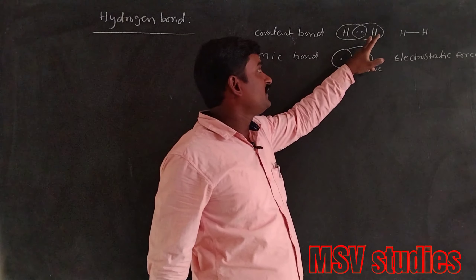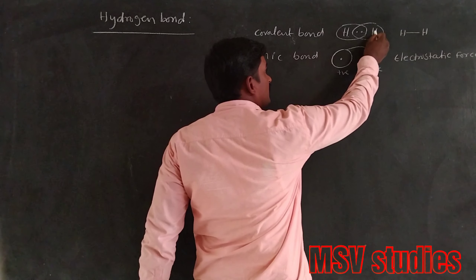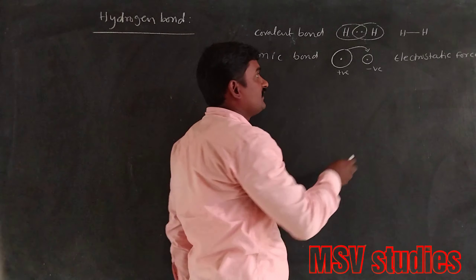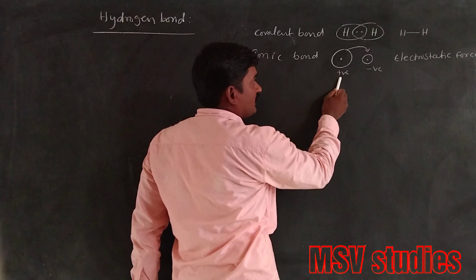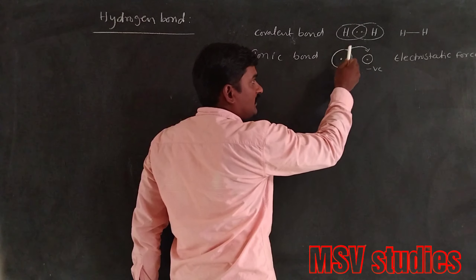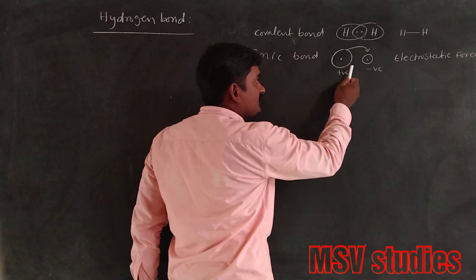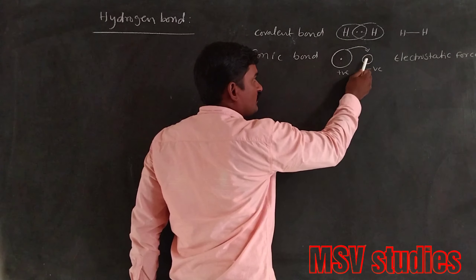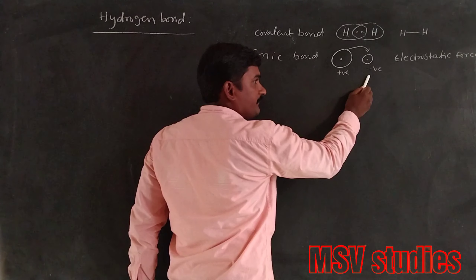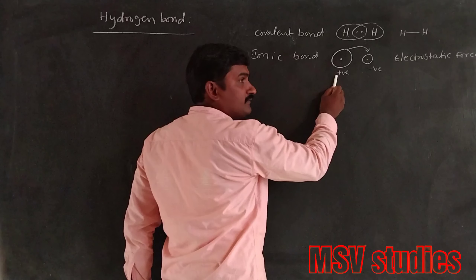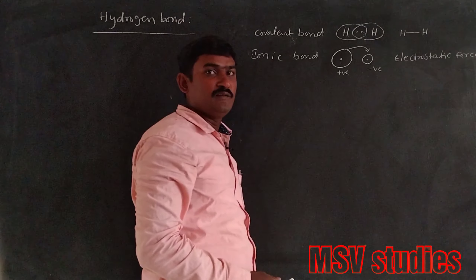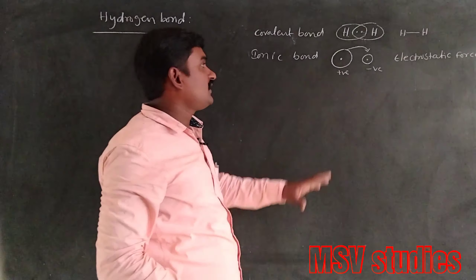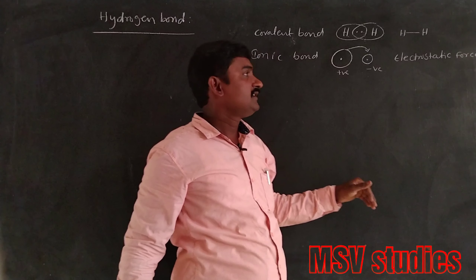The covalent bond is generally formed between two atoms by equal sharing of electron pairs. The ionic bond is formed between a large sized atom and a small sized atom by transfer of electrons. The large sized atom is converted into a cation and the small sized atom into an anion; both are attracted together by electrostatic force of attraction.